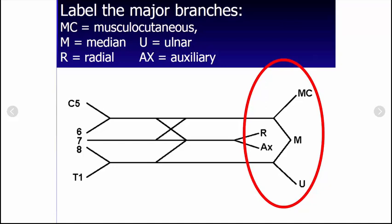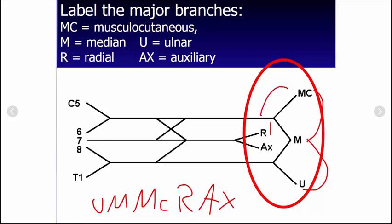I have a silly mnemonic how I can remember this. I just call this Umrax. Take it or leave it. I once read some science fiction novel and there was some evil lord called something like Umrax. That works well for me because if we go U-M-M-C-R-A-X, it'll be Umrax. That's how I can remember some of the terminal branches.